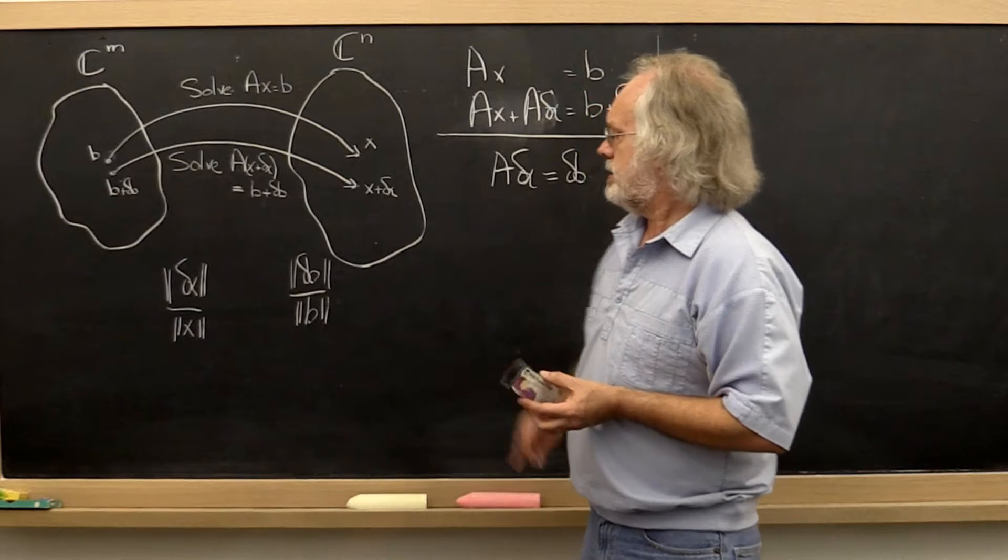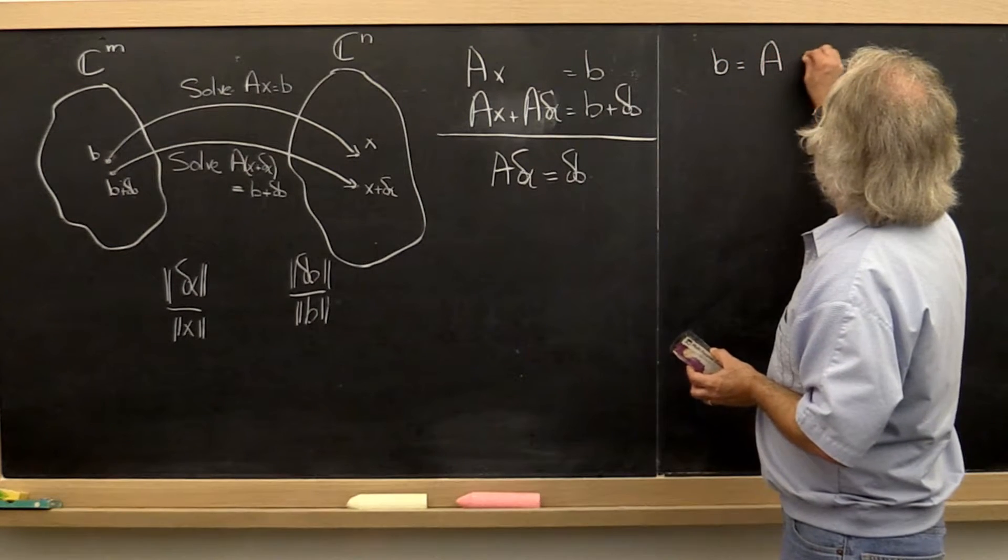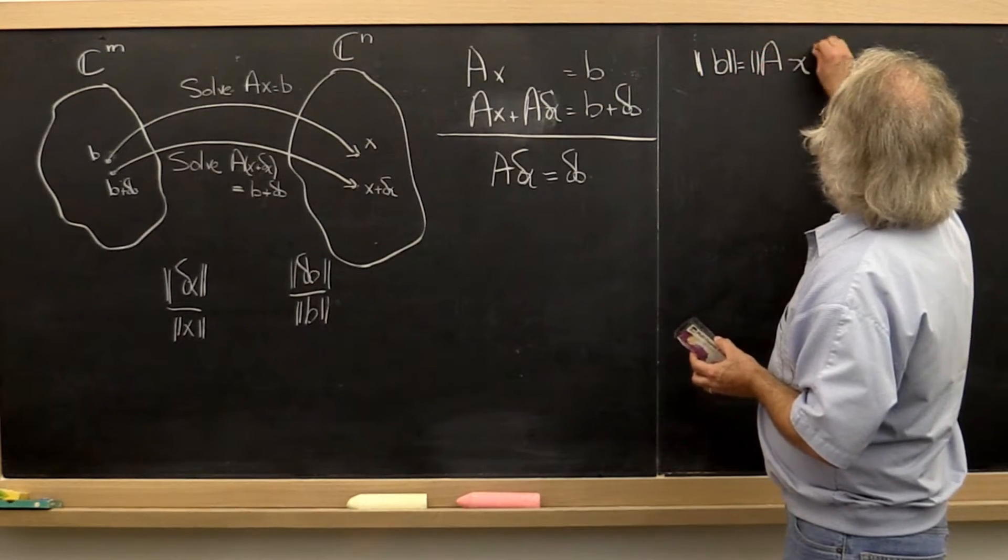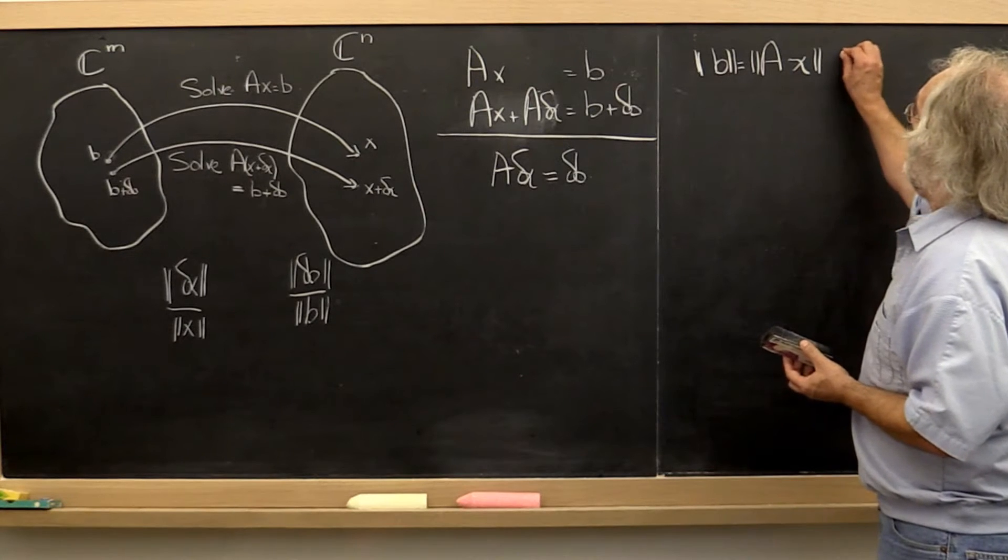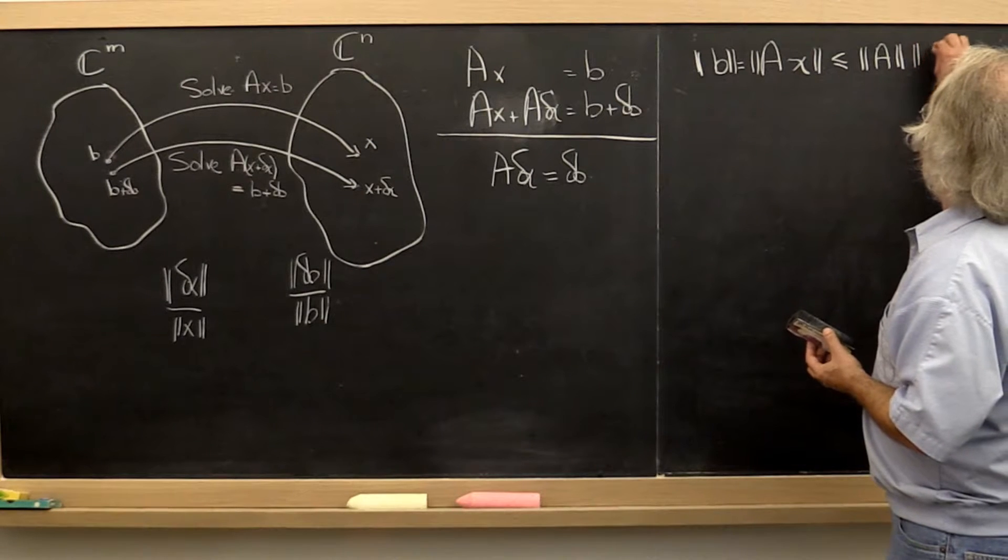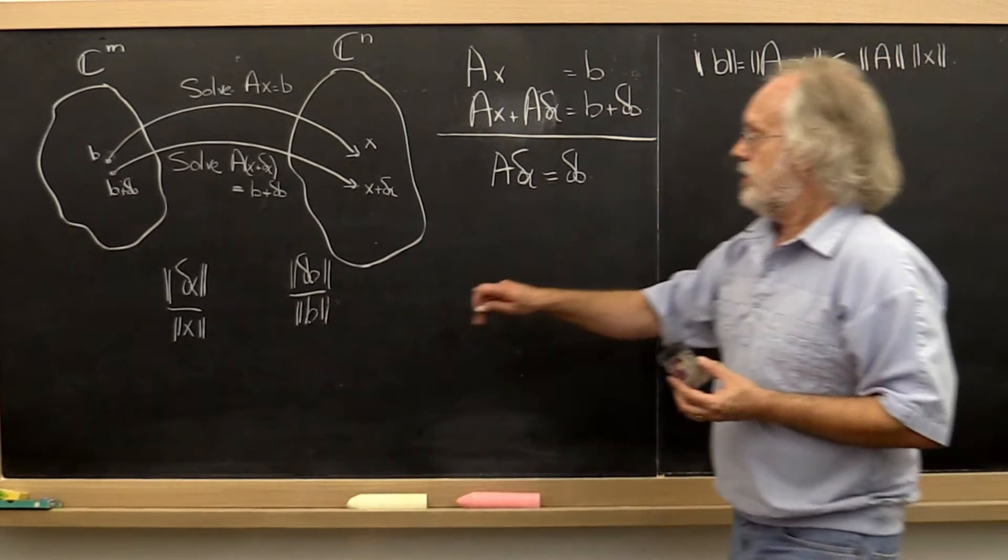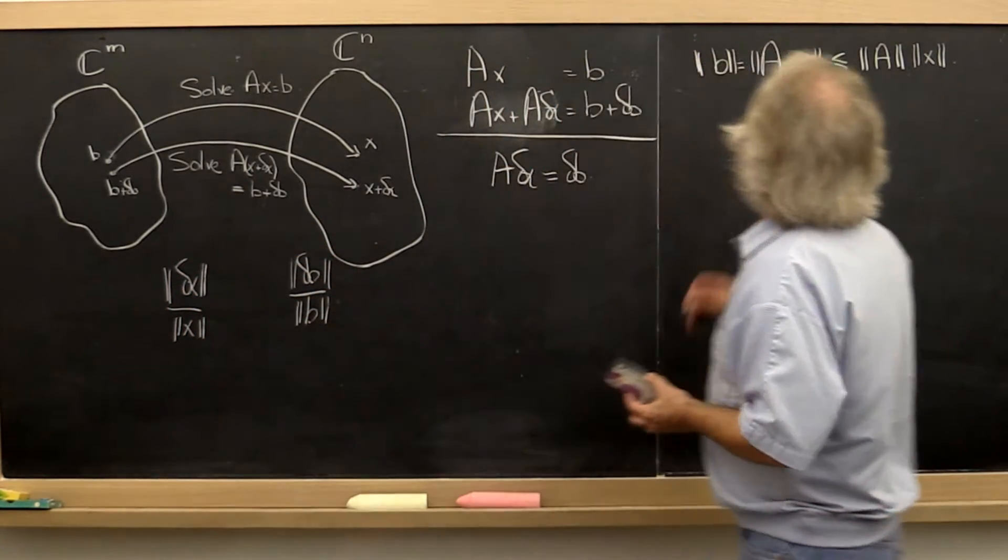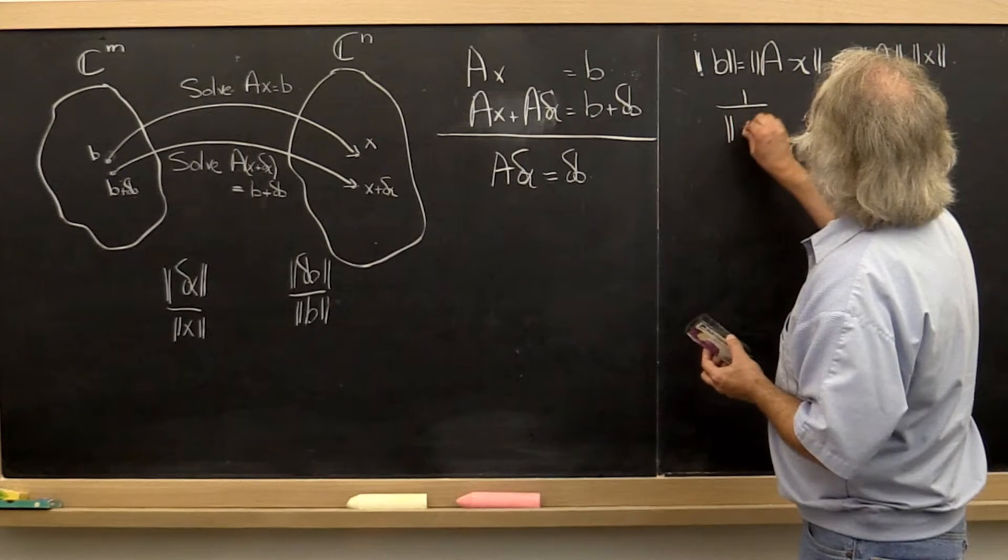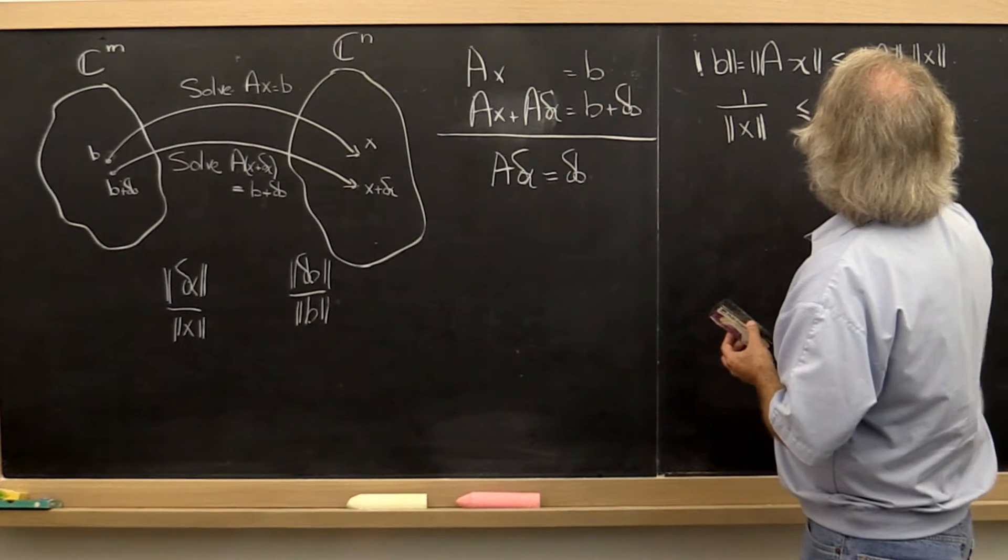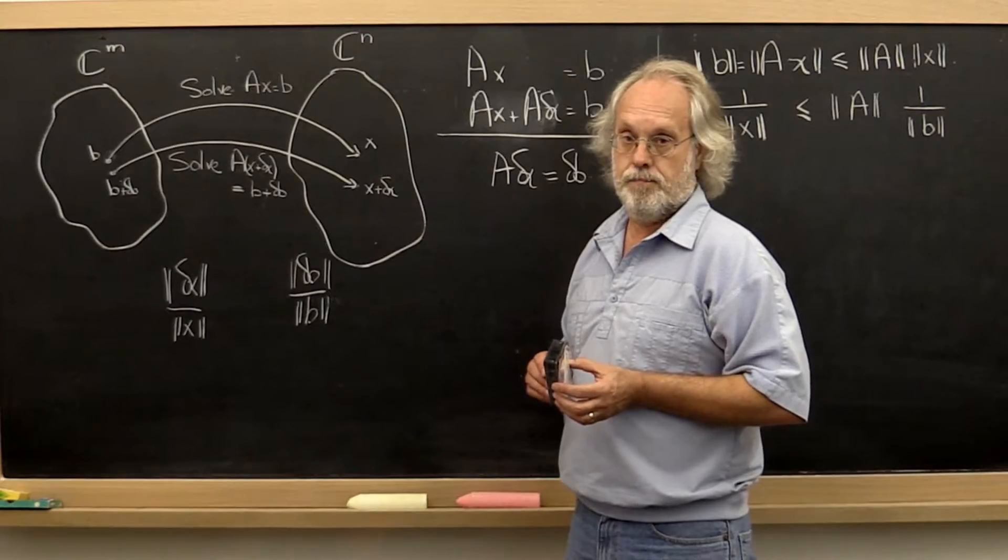Now we want to start taking some norms. We start with this and rewrite it as B equals Ax so that we can take the norm on both sides. If we use an induced matrix norm, then we know that the norm of B is less than or equal to the norm of A times the norm of x. We can rearrange this by bringing the norm of x to the left, the norm of B to the right, and rewrite this as 1 over the norm of x is less than or equal to the norm of A times 1 over the norm of B.